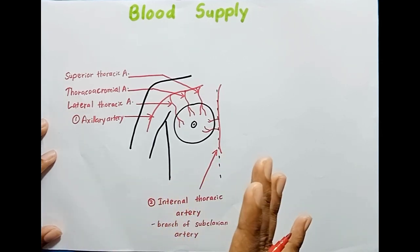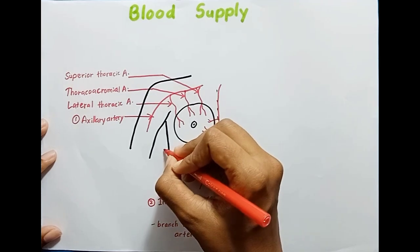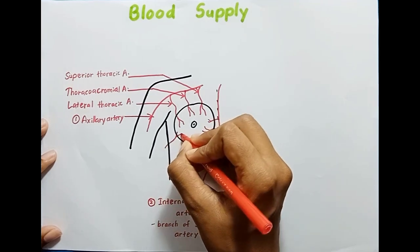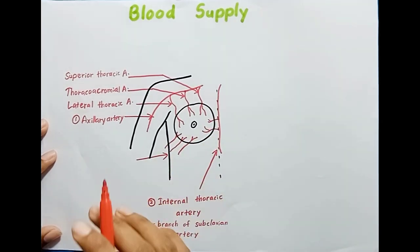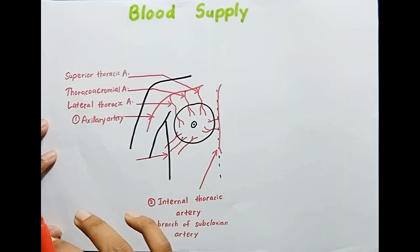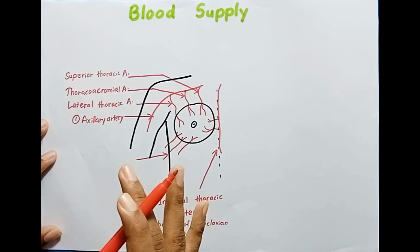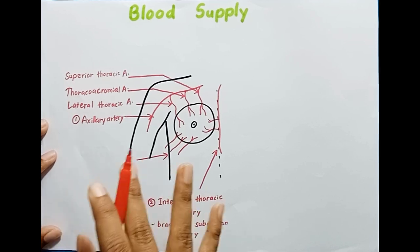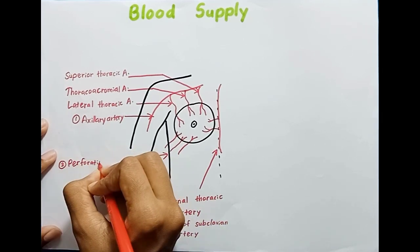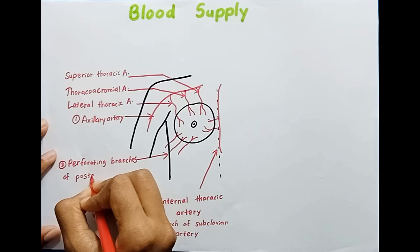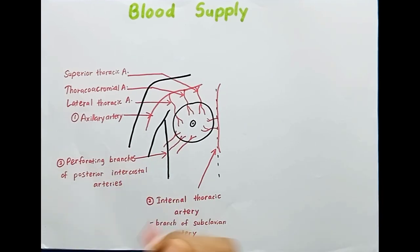The third arterial supply of the breast is the perforating branches of the posterior intercostal arteries. Here we can see those perforating branches of the posterior intercostal arteries. So these three are the major arterial supply of the breast.